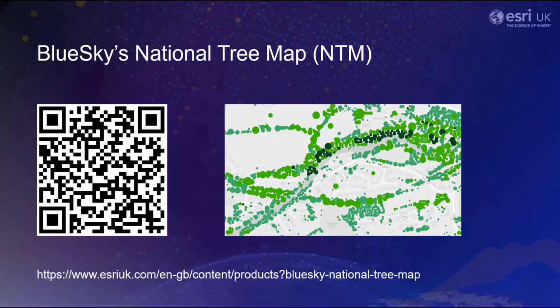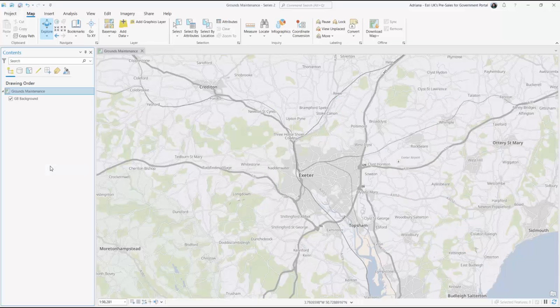The national tree map data set is available in a ready-to-use format through Esri. If you would like to learn more and subscribe to this data set, talk to your Esri UK account manager. So let's load this data set into ArcGIS Pro.